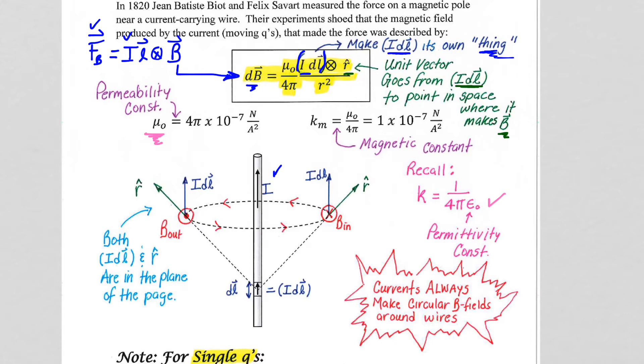We are going to take our differential element, our IDL thing. So that's a chunk of the wire, and we're going to say, what B field does that IDL produce at this point over here in space? Well, we are going to focus on just the numerator, the IDL cross R hat. That's going to give us our B field direction.